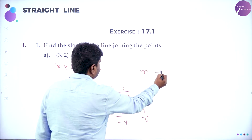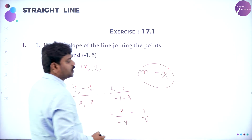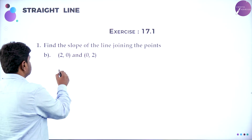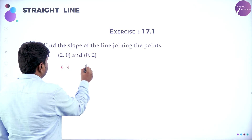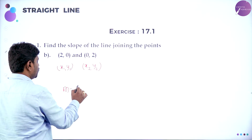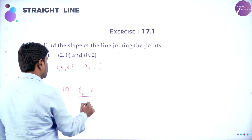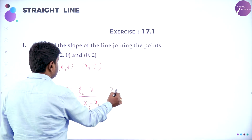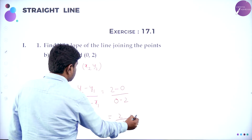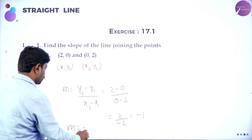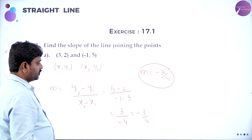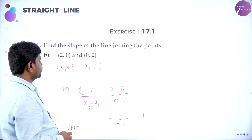So you got the value of slope, that is minus 3 by 4. Similarly, the second problem with X1, Y1 and X2, Y2 given: slope of line joining points is Y2 minus Y1 by X2 minus X1, that is 2 minus 0 divided by 0 minus 2. 2 minus 0 is 2 by minus 2, which gives minus 1. So slope M is equal to minus 1.